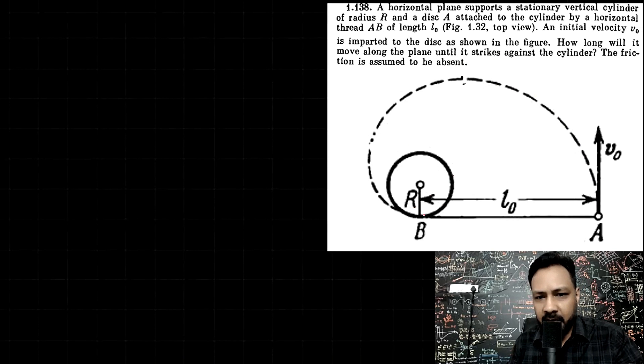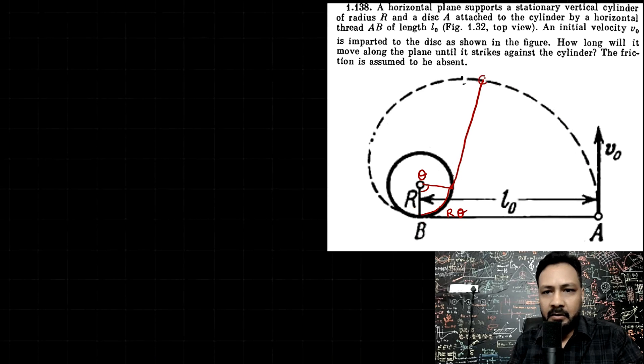After the string has been wrapped over the cylinder by an angle theta suppose, this is the wrapped part of the string and it has been wrapped by an angle theta. The length of the string wrapped over the cylinder is R theta and this is the unwrapped part of the string.